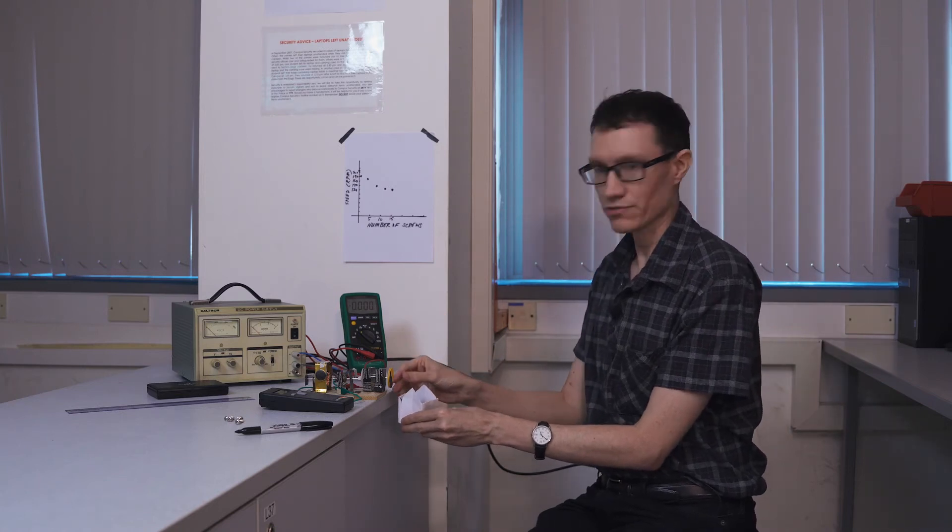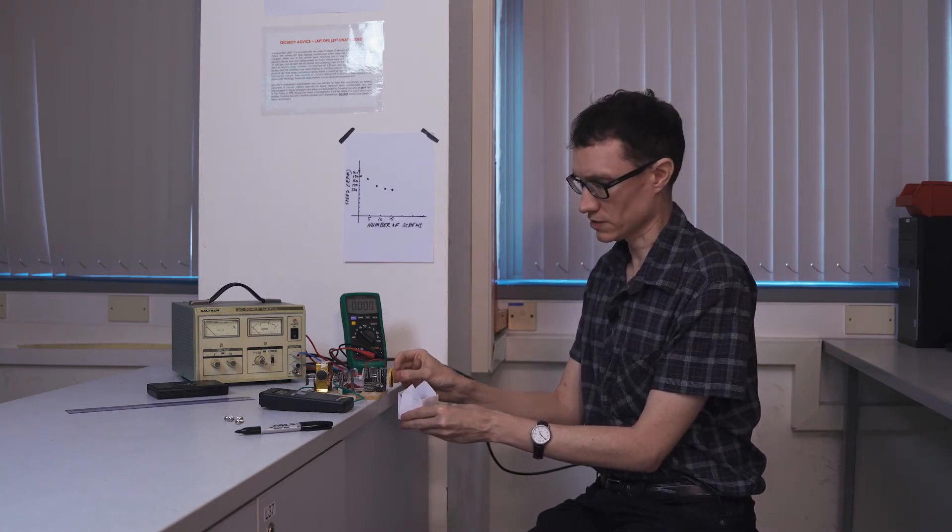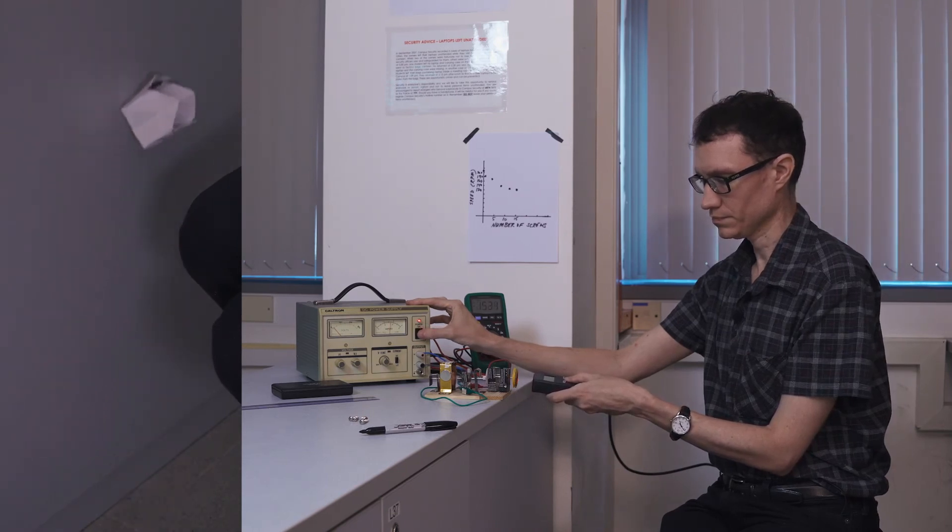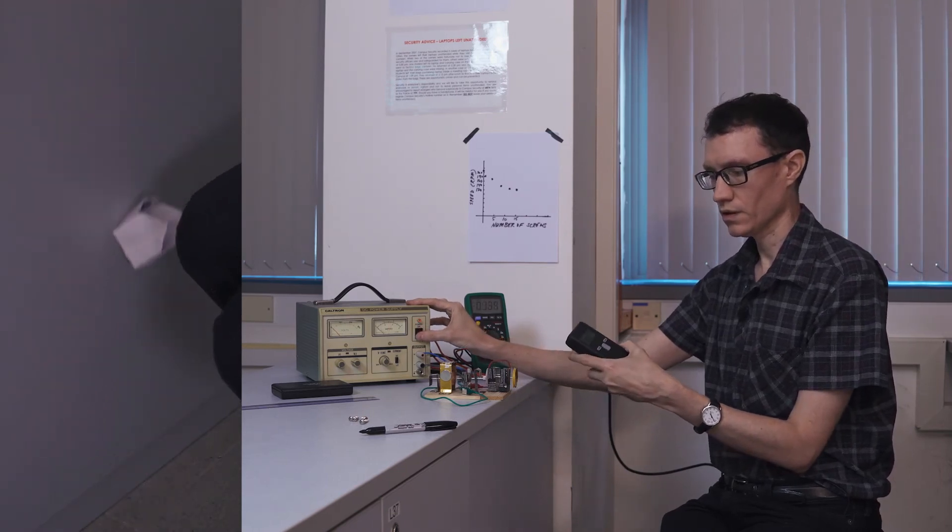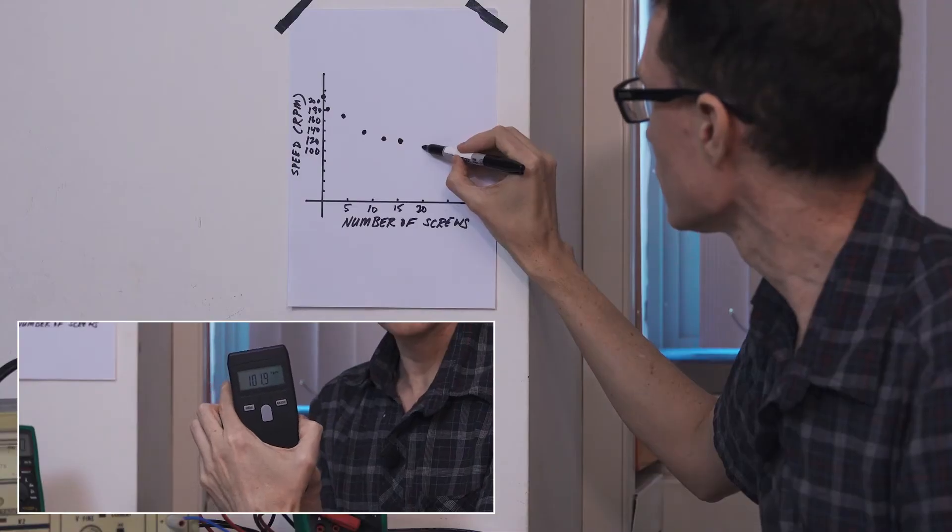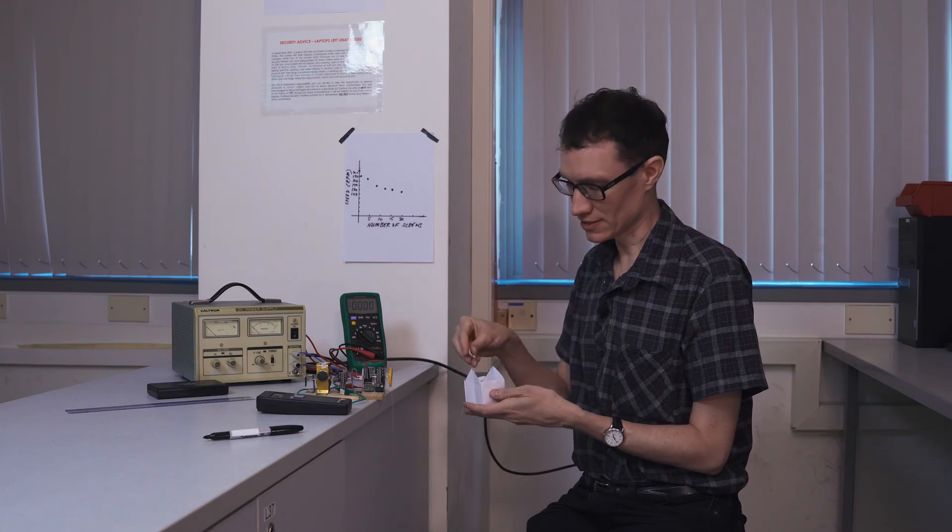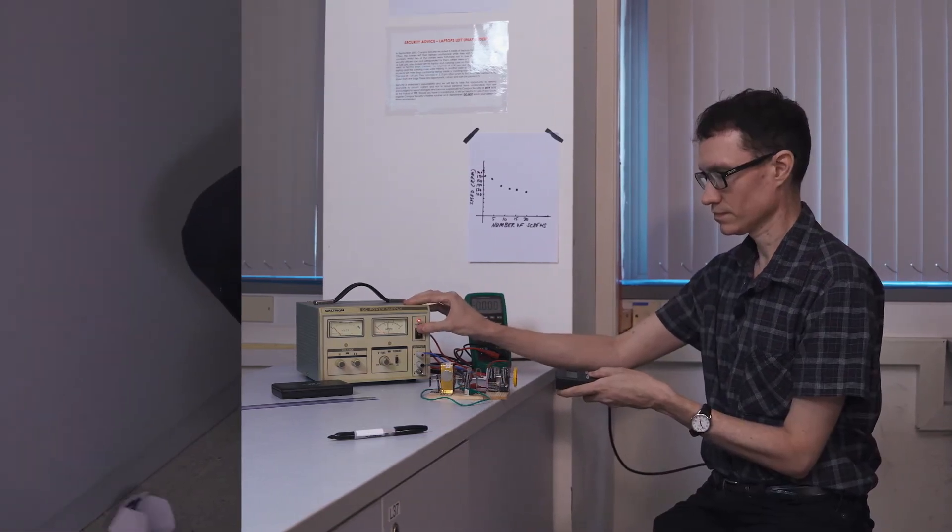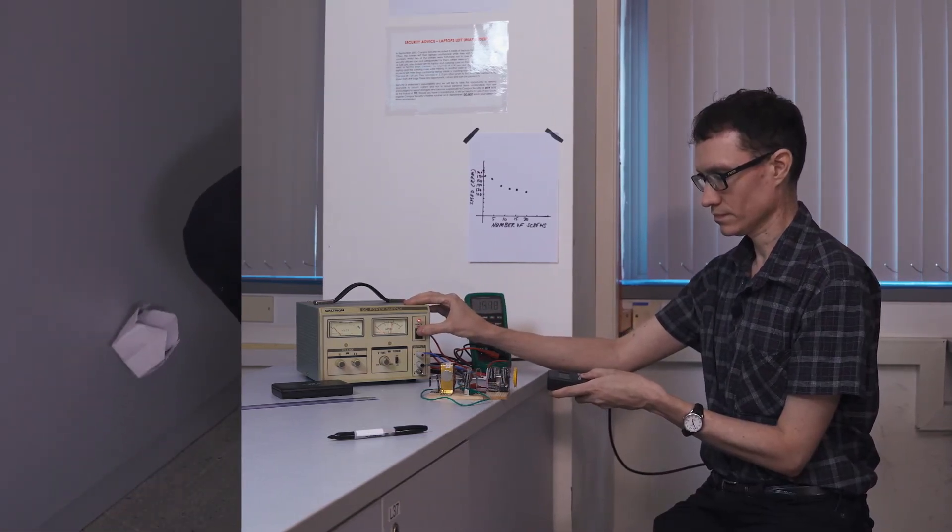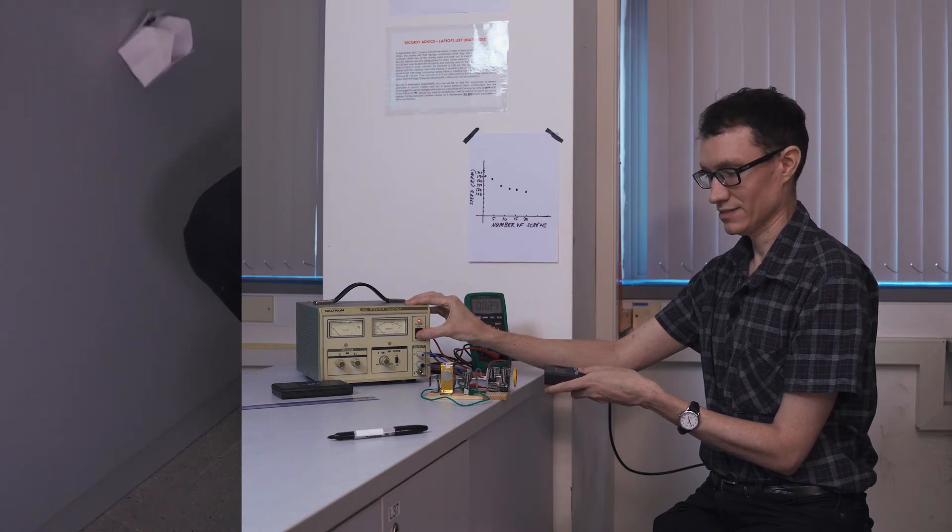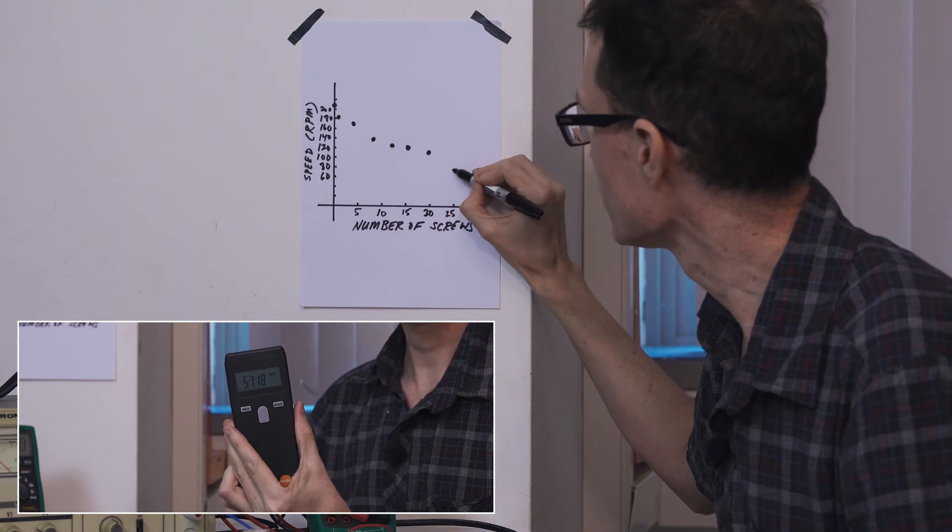I've added four more, so we now have 21 screws in the little bucket. 101 RPM. Let's try 25 screws. 57 RPM.